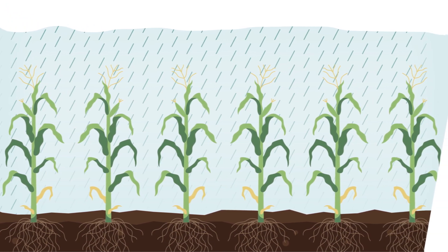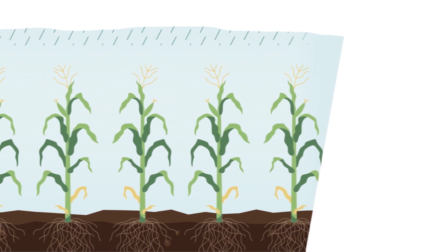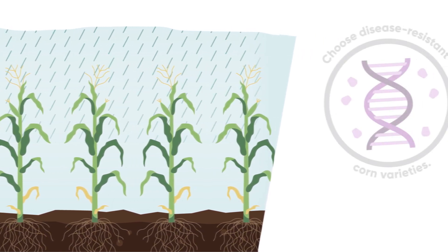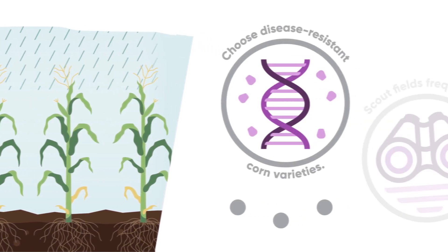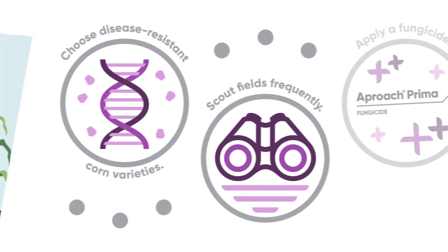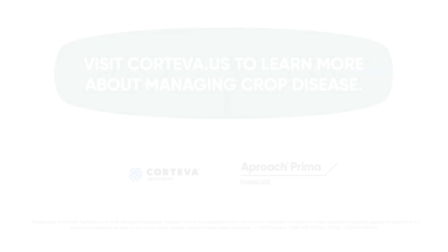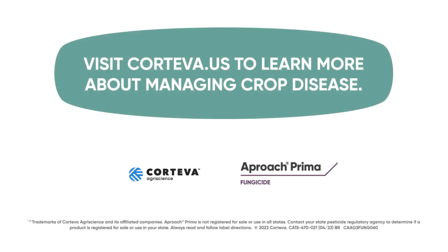You can limit yield loss from tar spot and other corn diseases by choosing disease-resistant corn varieties, scouting fields frequently throughout the growing season, and by applying a fungicide when environmental conditions favor disease development. Choose a fast-acting fungicide such as Approach Prima to protect your yield from tar spot.